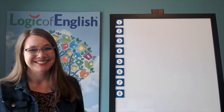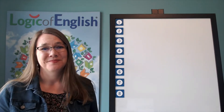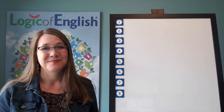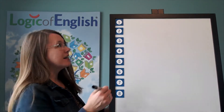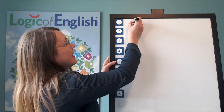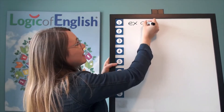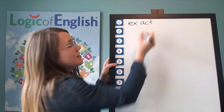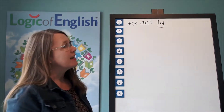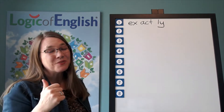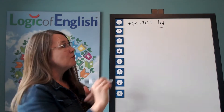You've got it. Sound it out as you write it. Good. Now help me to write it. The first syllable is ex. Ex. The second syllable is act. Act. The third syllable is lee. L-E. And how will we mark it? That's right.